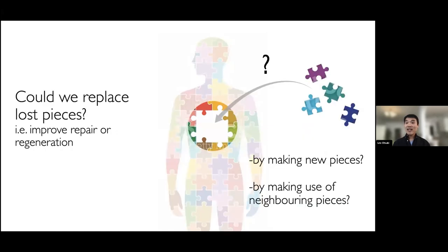Therefore, a very important question for regenerative research is to understand if we can one day replace or restore missing jigsaw pieces in adult patients — for example, by creating new jigsaw pieces, or perhaps by making use of the neighboring pieces that remain around the injury.